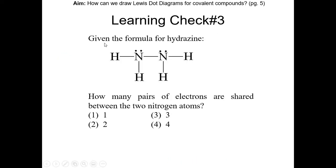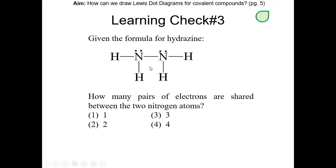Learning check number three: Given the formula for hydrazine, how many pairs of electrons are shared between the two nitrogen atoms? Pause the video and resume once you complete this. The nitrogens have one bond between them — that's two electrons or one pair. So the answer is choice one.